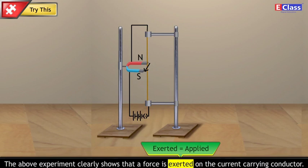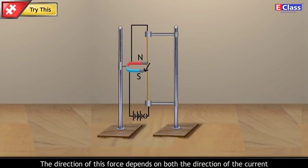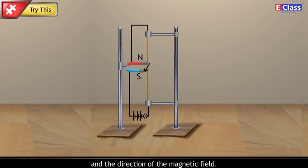The above experiment clearly shows that a force is exerted on the current carrying conductor. The direction of this force depends on both the direction of the current and the direction of the magnetic field.